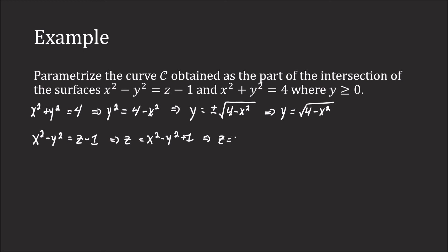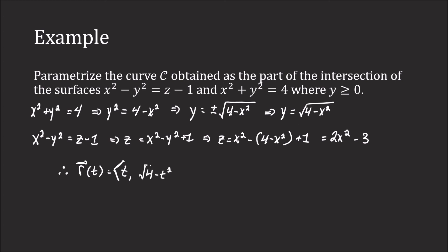We also know x² − y² = z − 1, so z = x² − y² + 1. Substituting y² = 4 − x² gives z = x² − (4 − x²) + 1 = 2x² − 3. Since x can be any value, we let x = t as our parameter. So r(t) = <t, √(4 − t²), 2t² − 3>. That is the first method.